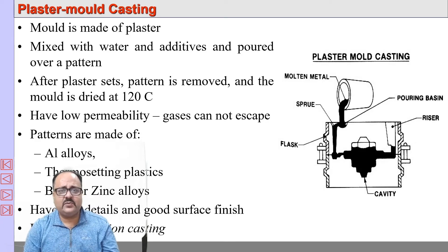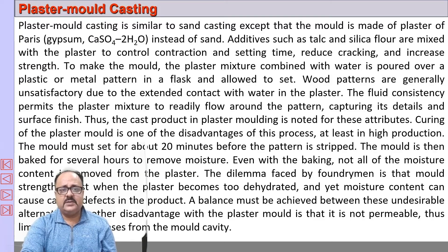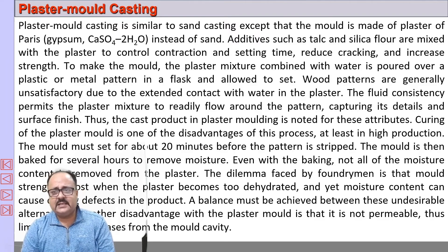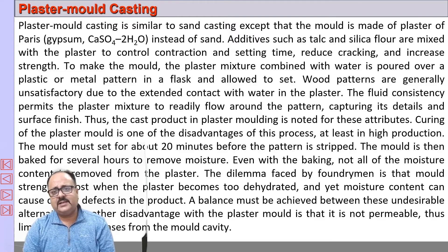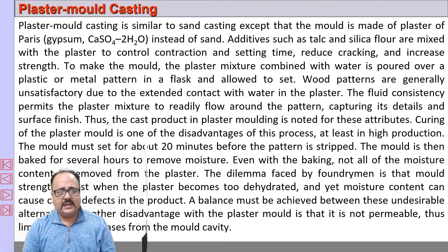Next is plaster mold casting. It is very similar to sand casting — the only difference is that in place of molding sand, we use plaster, which is gypsum. Gypsum is basically calcium sulfate with water molecules, mixed with water. Certain additives are also added like talc and silica to control contraction, setting time, and reduce cracking during baking.